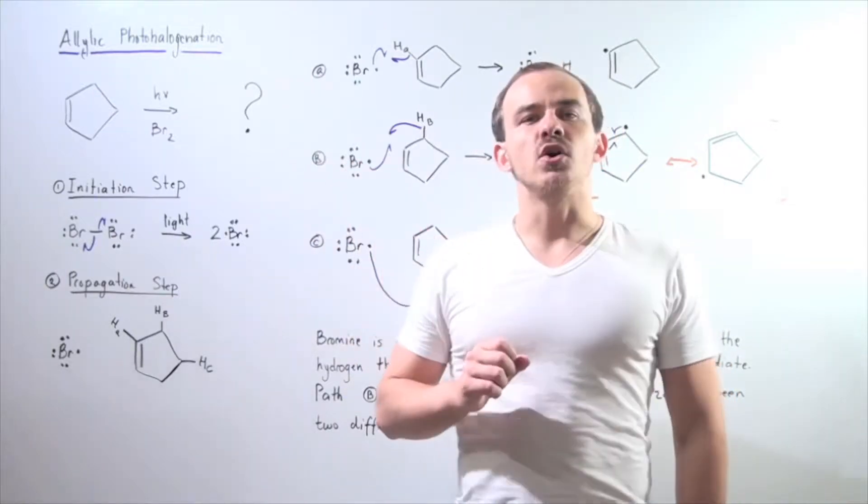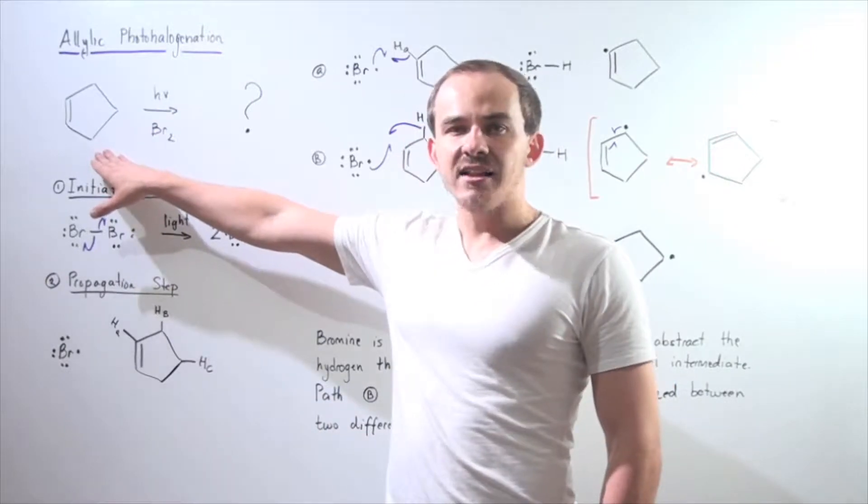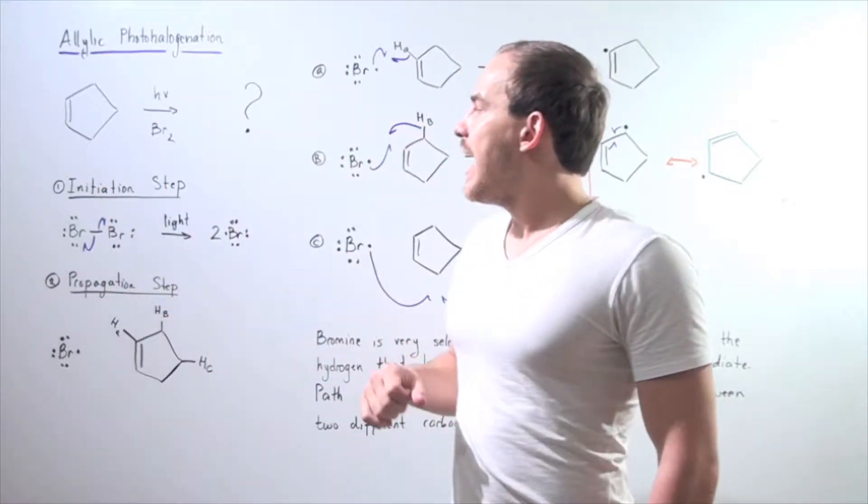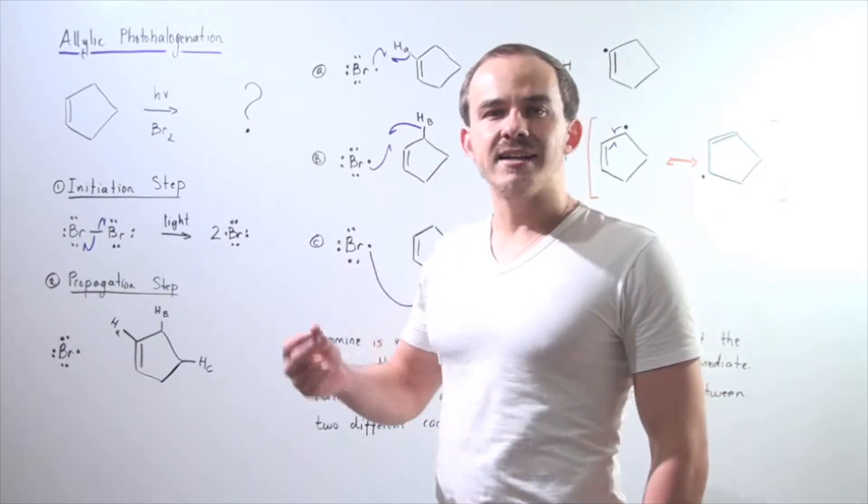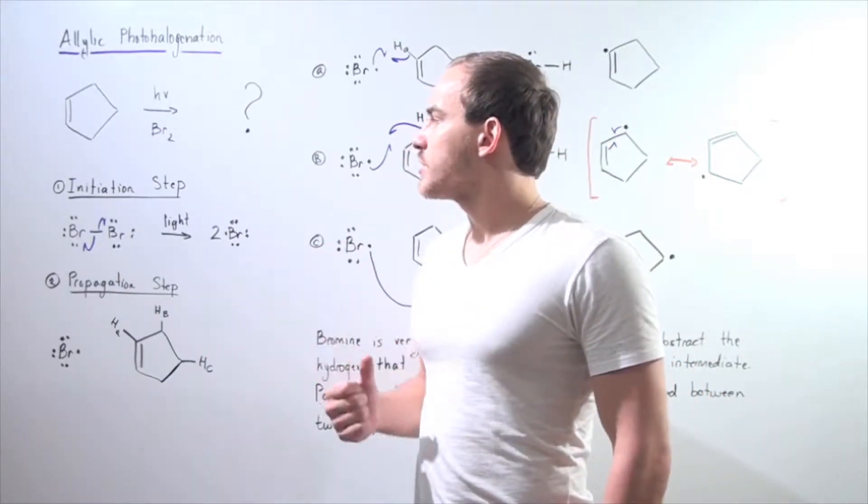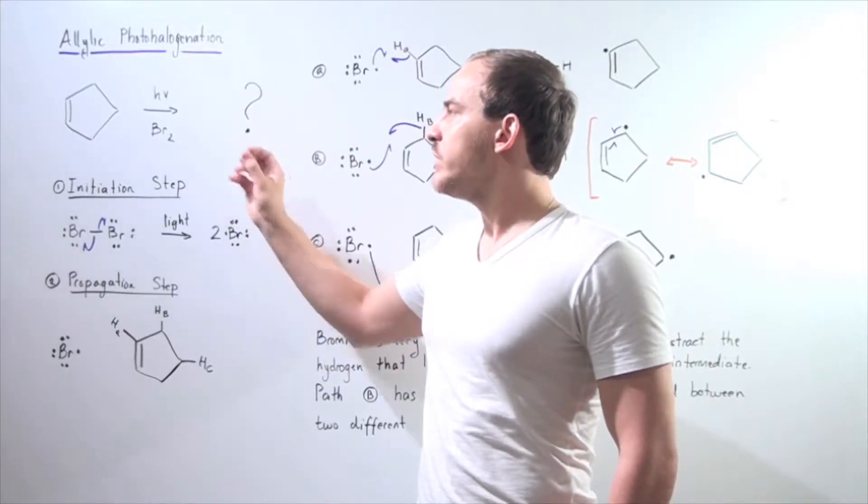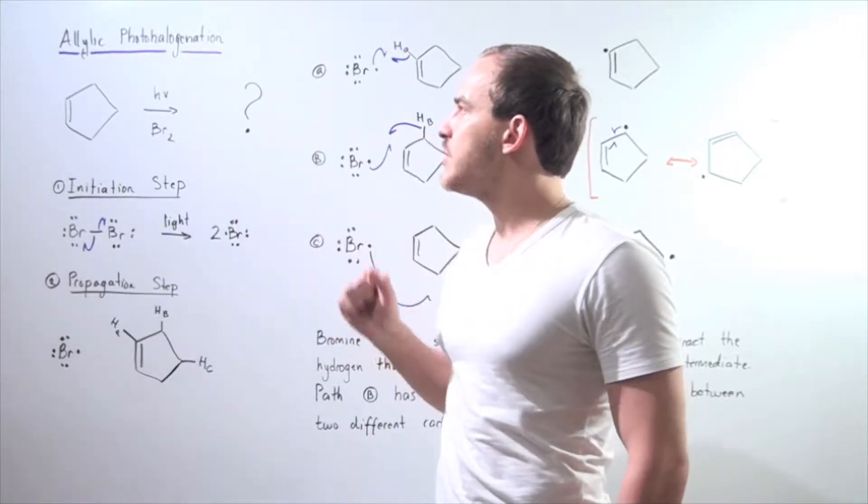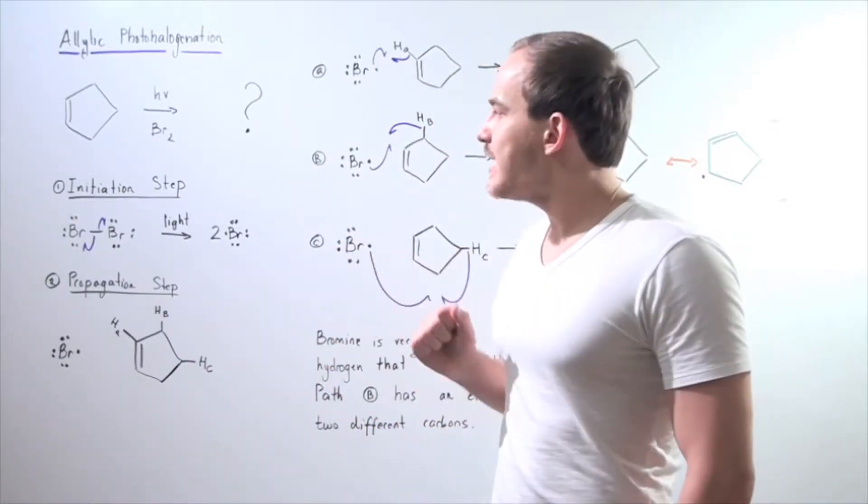So let's look at allylic photohalogenation. Let's suppose we have cyclopentene and mix it with a bromine molecule and add light, our energy source. What is our final product? Well, to determine our final product, we must remember that photohalogenation has an initiation step as well as the propagation step.